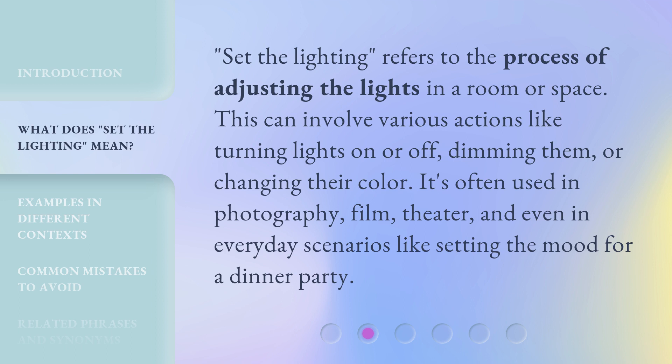'Set the Lighting' refers to the process of adjusting the lights in a room or space. This can involve various actions like turning lights on or off, dimming them, or changing their color. It's often used in photography, film, theater, and even in everyday scenarios like setting the mood for a dinner party.